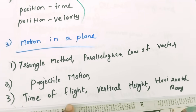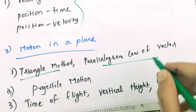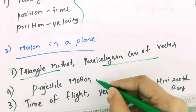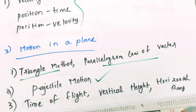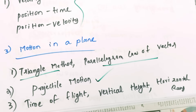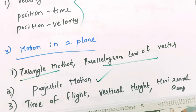I am going to ask about the third chapter. In the third chapter, Motion in the Plane: the triangle method, the triangle law of addition, the parallelogram law of vector — that is the definition. What is the projectile motion? You can derive an expression for time of flight of a projectile body, vertical height, and horizontal range.